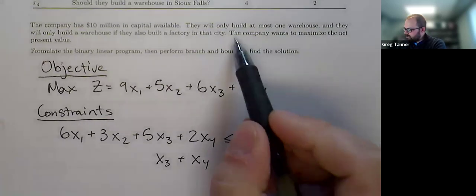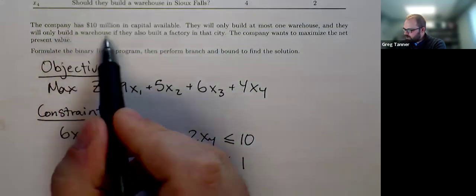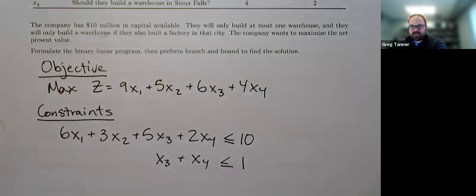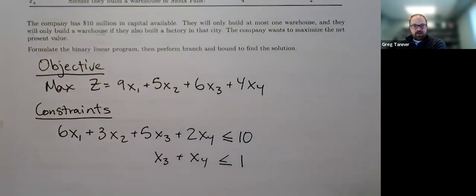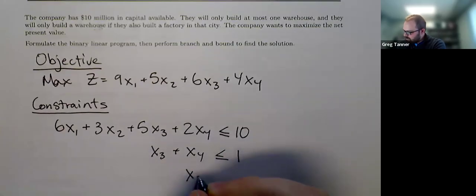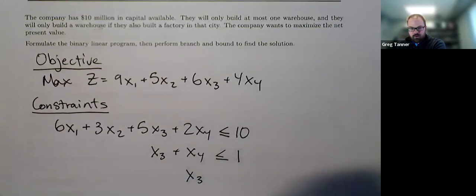And then the other thing we have is that they will only build a warehouse if they also already build a factory in that city. And so that gives us some contingent decision type ones. And so if we think about it, our x3 is one of our warehouse variables, and that's the warehouse in Fargo. And we can only let it be one if the factory in Fargo, which is x1, is already true. And so we're going to say that that's less than or equal to x1. So if x1 is zero, it's going to push down and force x3 to also be zero.